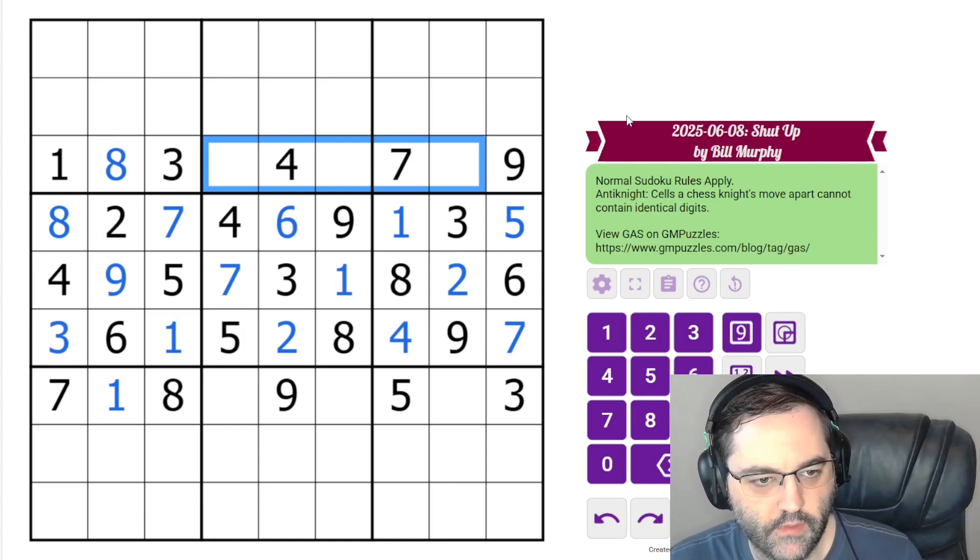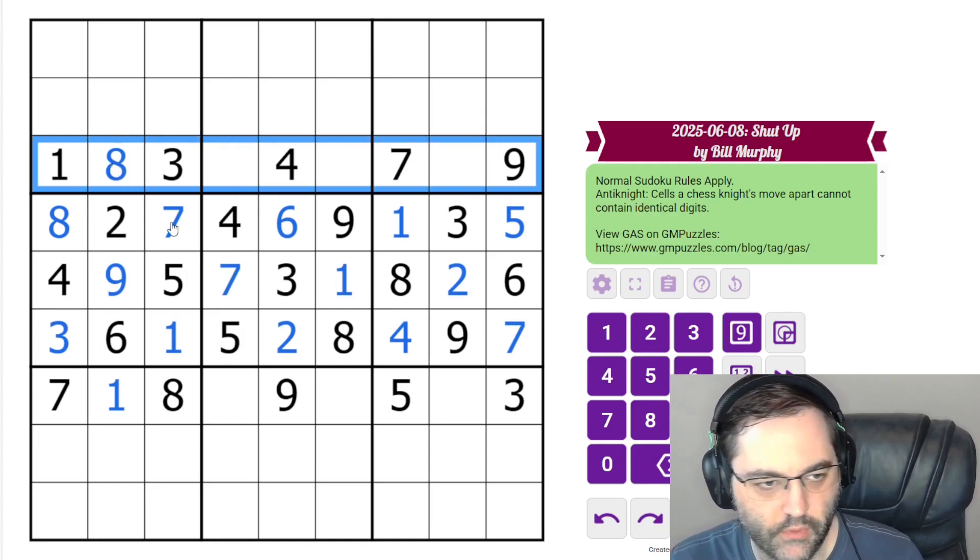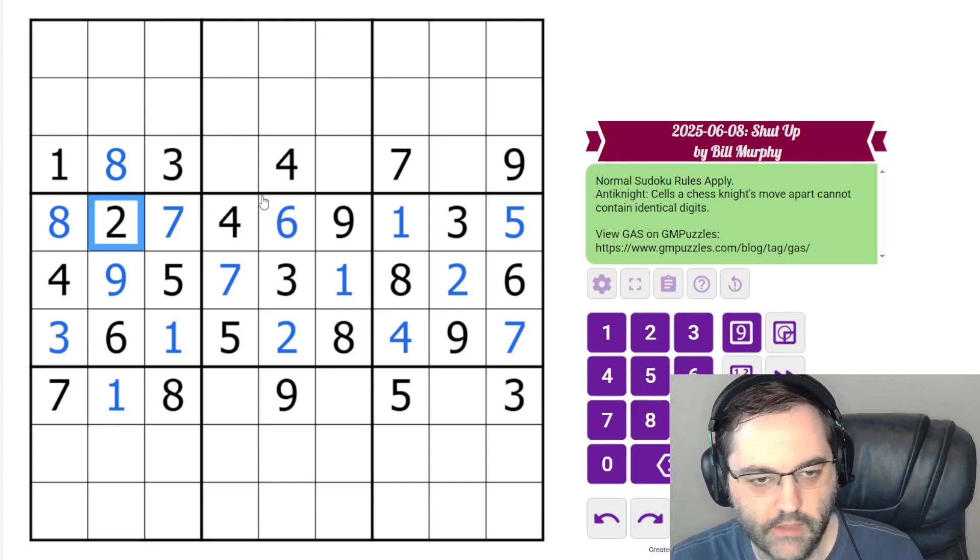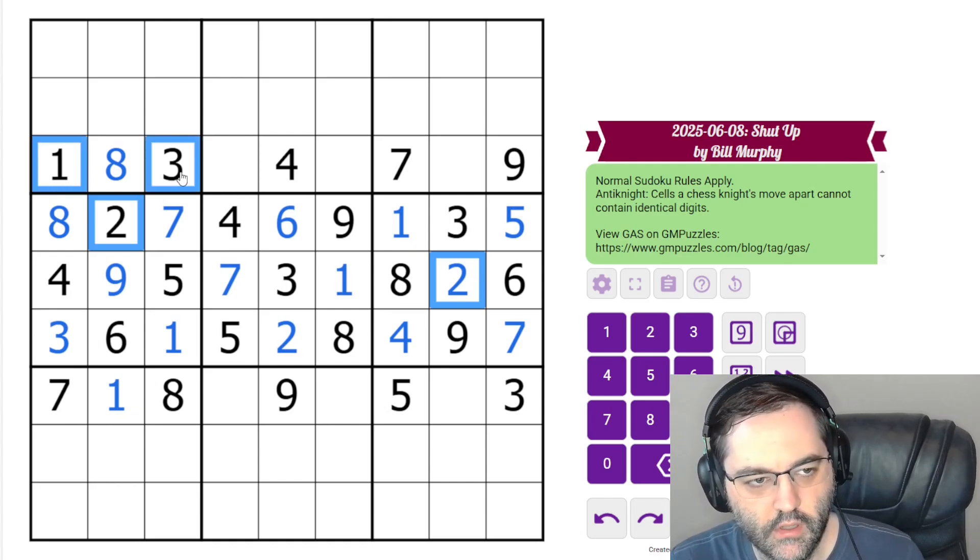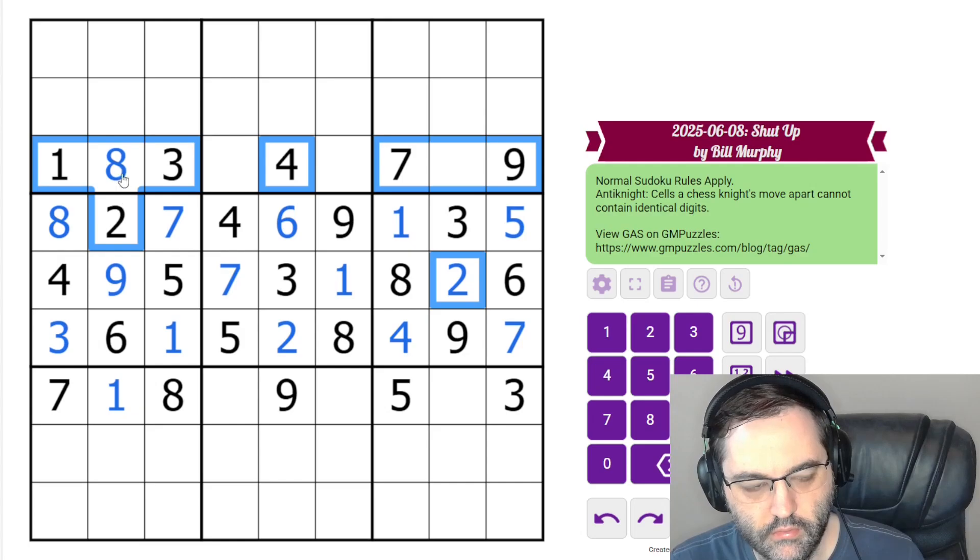So that is the middle band done. The rest of the digits in this row are two, five, six. I was going to point out, this isn't quite the way I solved this one. The first thing I noticed in this row is something that I've picked up by setting way too many anti-knight puzzles and solving them.